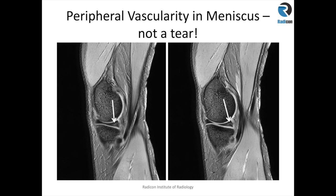Another finding not to confuse with a tear is peripheral vascularity signal change. You see this linear intermediate signal intensity on the images here — it doesn't cross the articular surface and is quite smooth. It may reach the peripheral capsular surface or attachment of the meniscus, but not the articular surface, so on MR characteristics it is not diagnostic of a tear. This tends to appear in younger people and teenagers; I label it as peripheral vascularity and dismiss it. In older populations it may be more rounded with thickening of the meniscus and the signal reaching the articular surface, which can indicate mucoid degeneration.